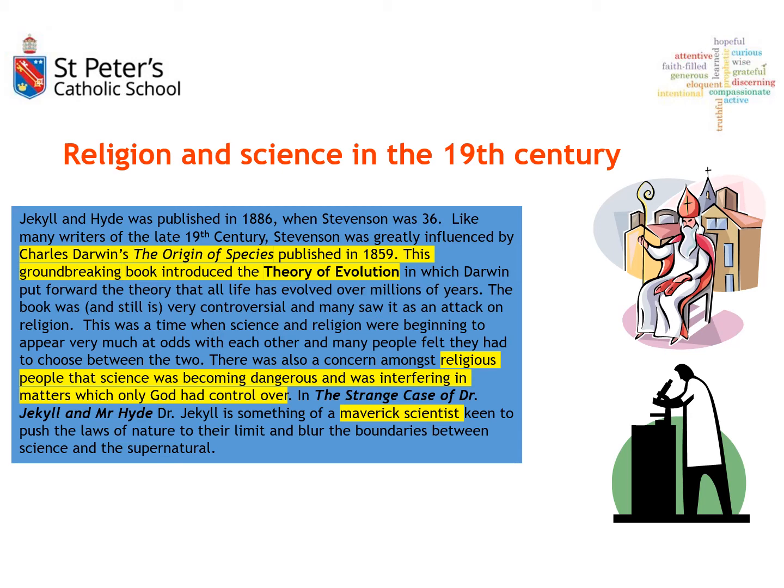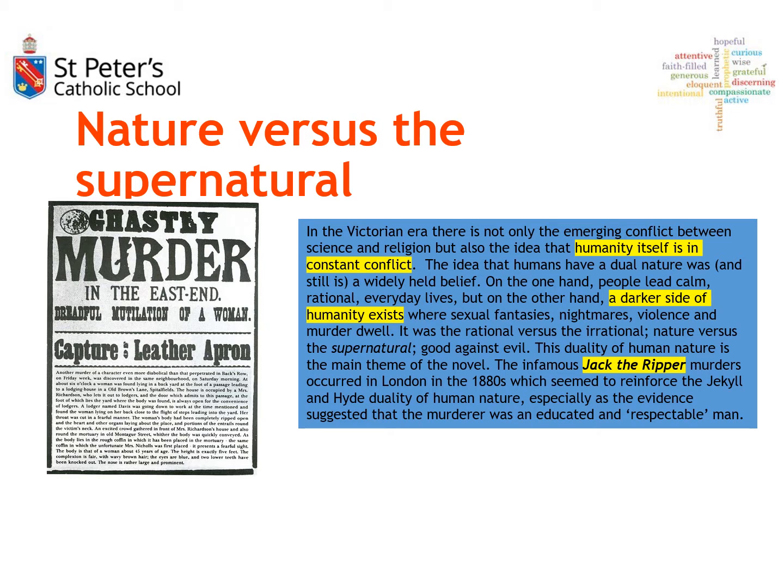Lanyon and Jekyll have different, opposing attitudes towards science. Lanyon is the more traditional scientific individual who integrates God within his experiments, whereas Jekyll is seen as a maverick scientist who pushes the boundaries of what science is capable of. This also links to the Gothic genre — novels like Frankenstein, released around the same time, explore what science can do and pose the question of whether it should.